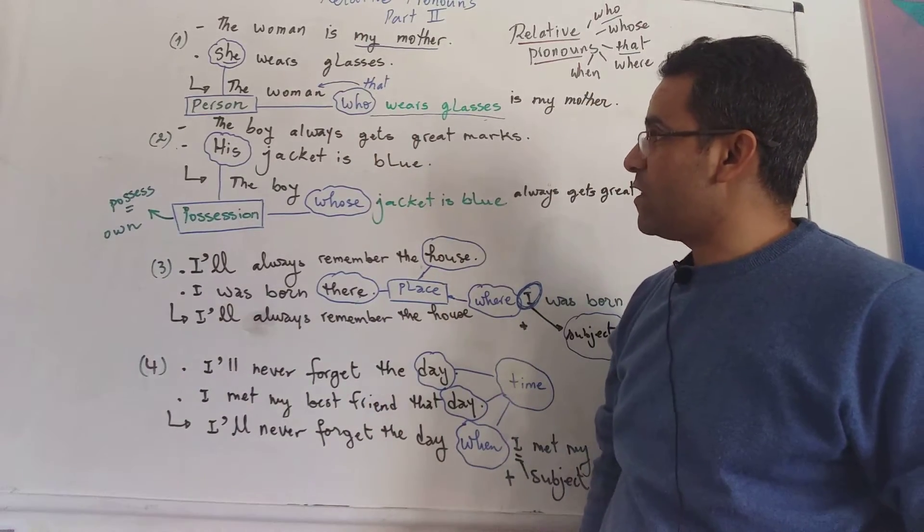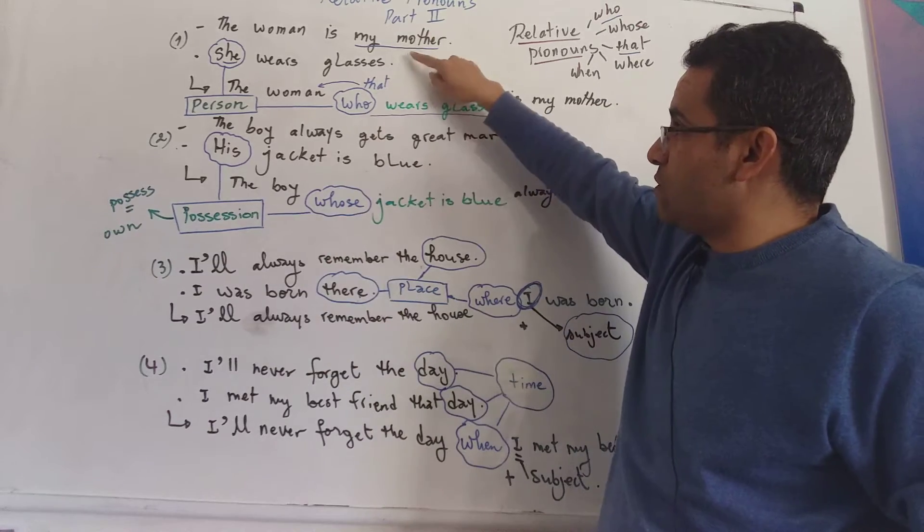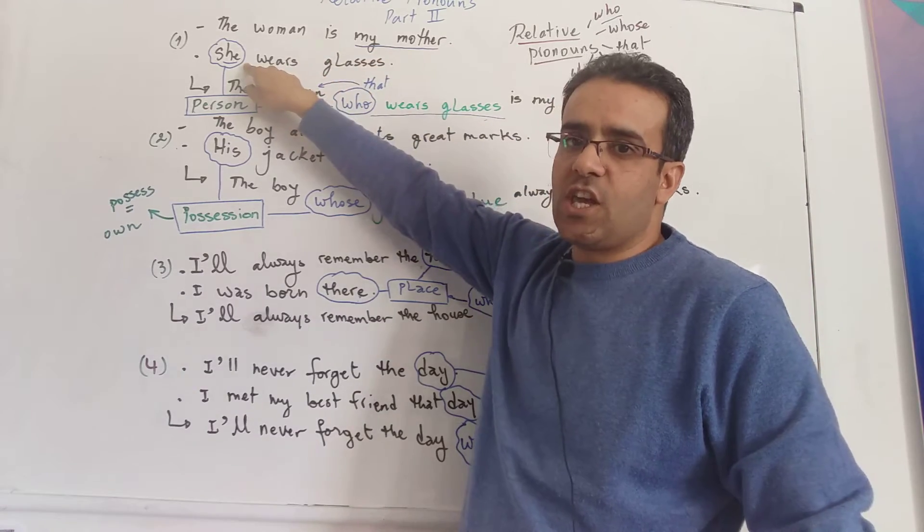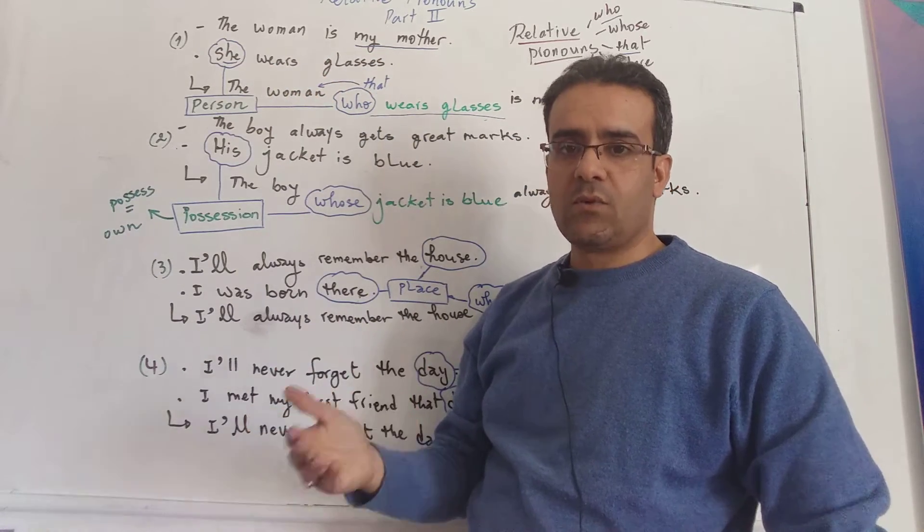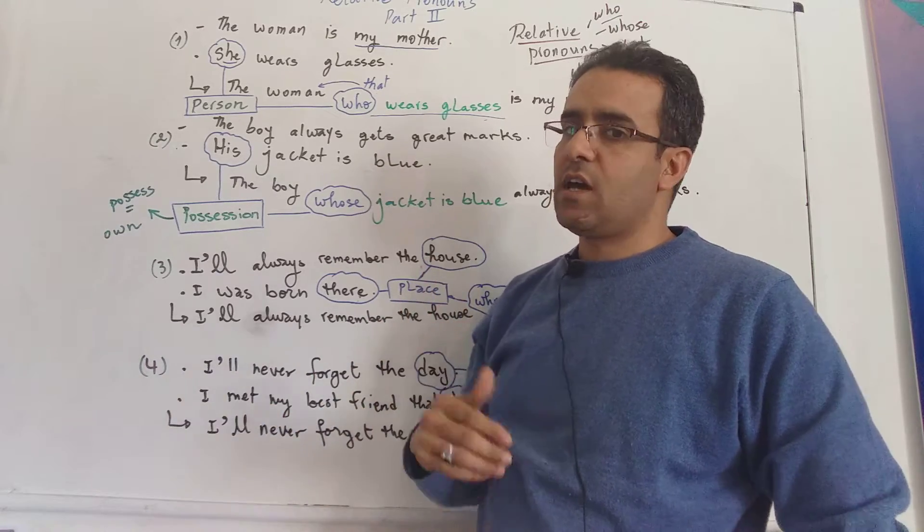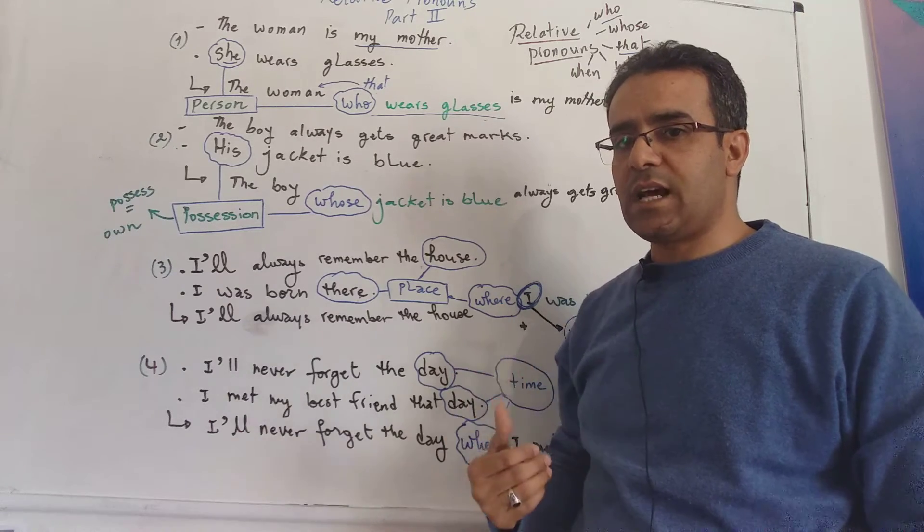The woman is my mother, she wears glasses. You might have noticed we're talking about my mother and she, which means the same thing. In other words, we are repeating the same thing two times and of course this is not accurate, appropriate language.